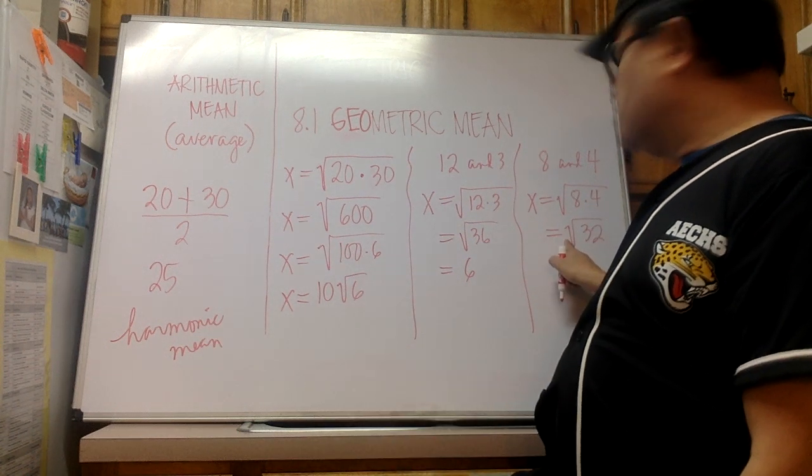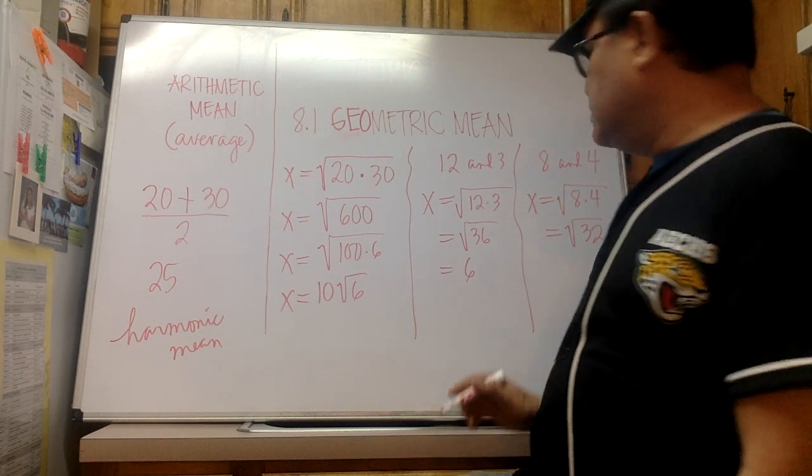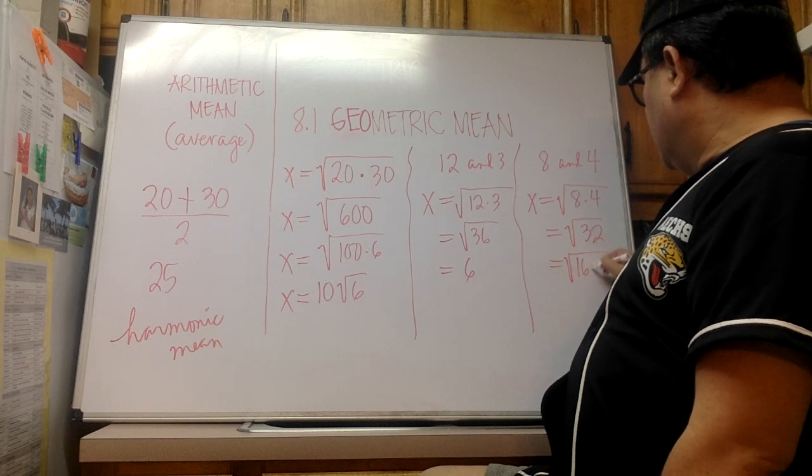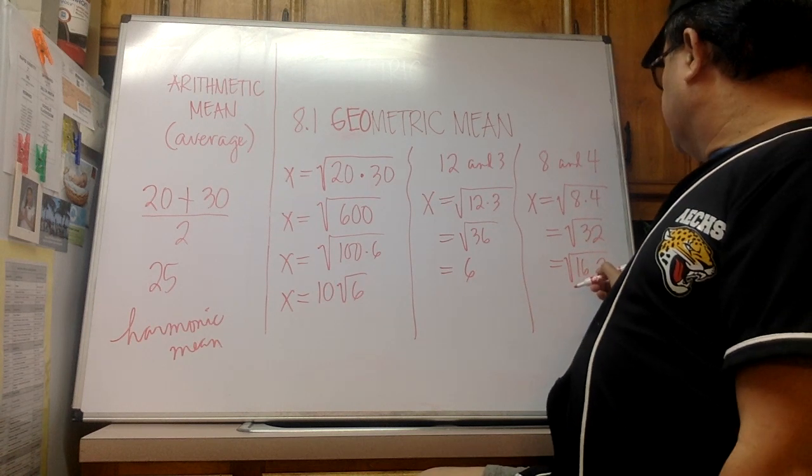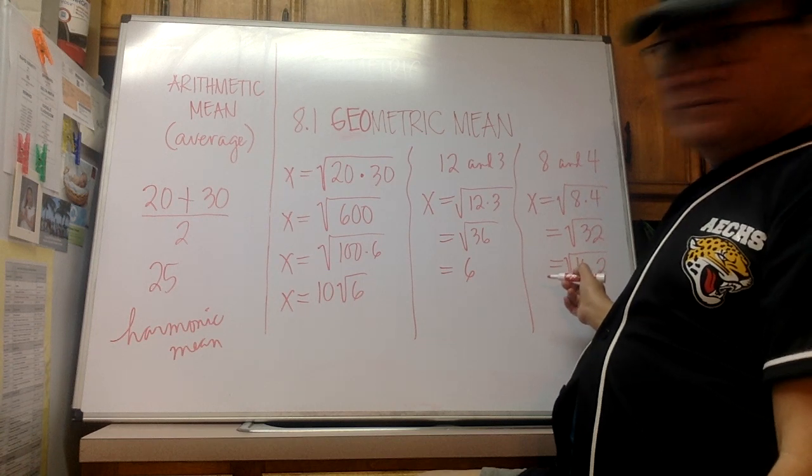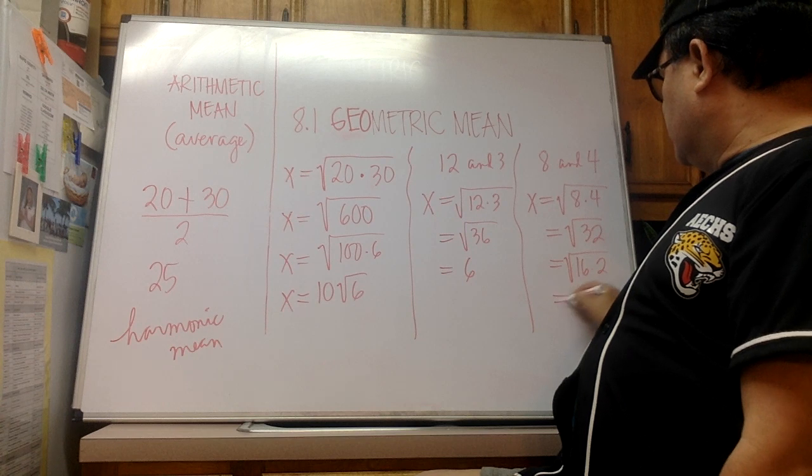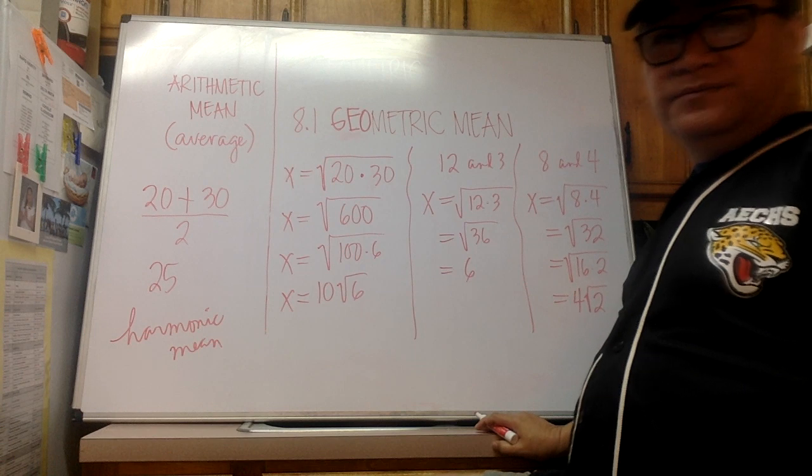So we're looking for a perfect square factor of 32, and that happens to be 16, right? 16 times 2 is equal to 32, is that correct? Yes. And the square root of 16 is equal to 4. Therefore the answer is 4 square root of 2.